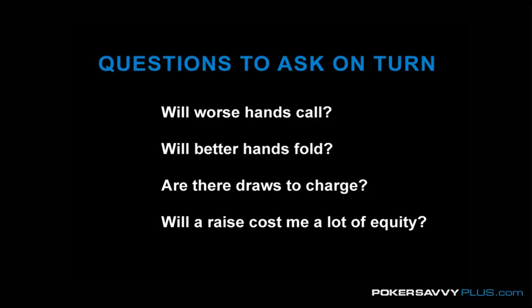The first one is just: will worse hands call your bet? If the answer is no, then you probably don't want to be value betting. That might seem obvious, but there's a pretty significant situation where a lot of people don't actually follow this rule and do value bet hands that aren't really going to get called by worse hands. Those are situations where there are a lot of draws out. A lot of times people will bet a hand like top pair with a bad kicker, or maybe even a medium pair, in a situation where you're not going to have the best hand all that often.